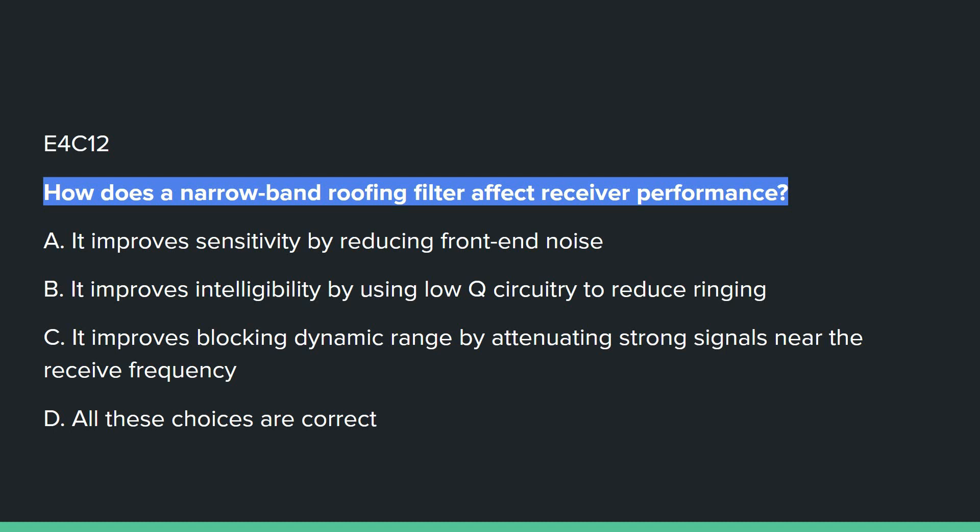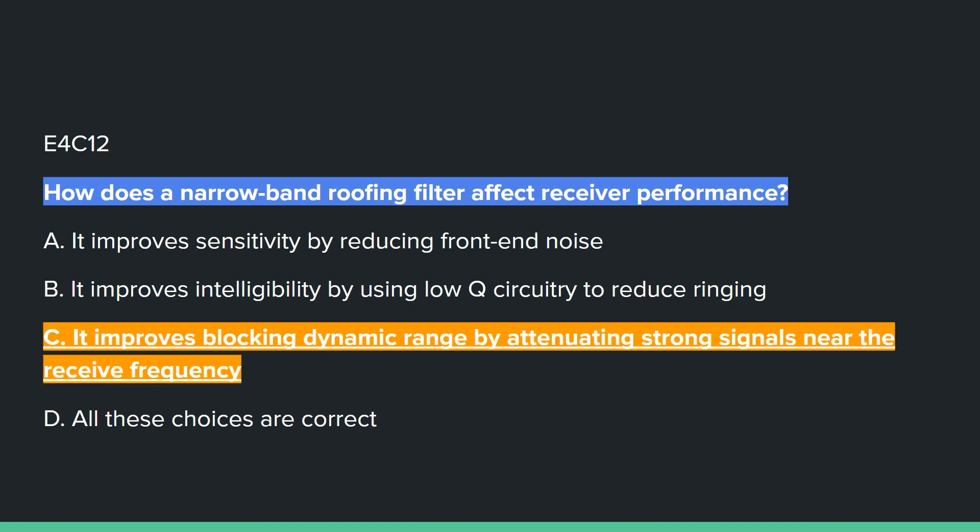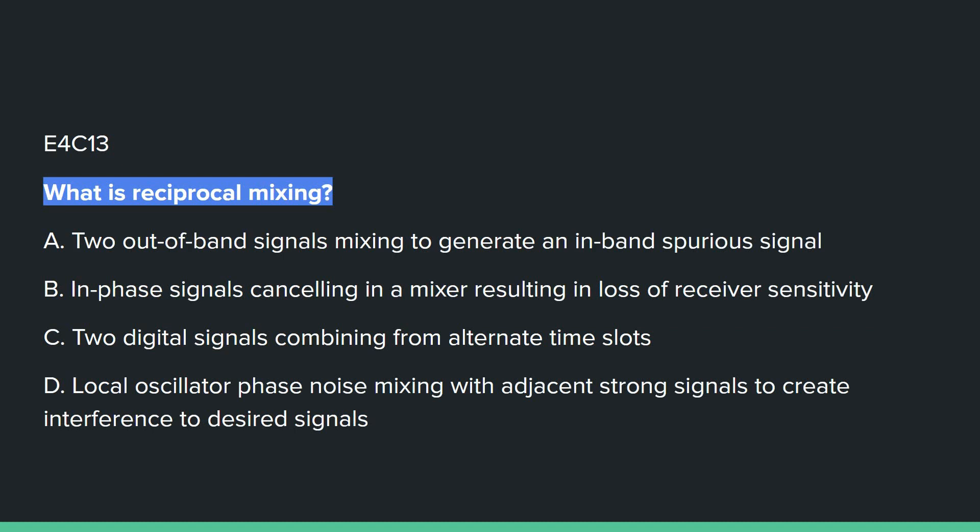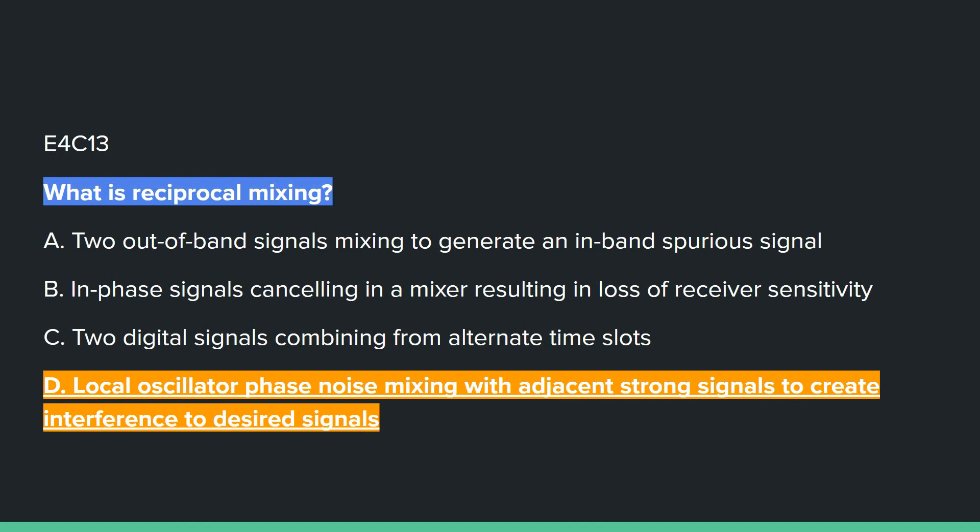E4C12: How does a narrowband roofing filter affect receiver performance? Answer C: it improves blocking dynamic range by attenuating strong signals near the receiver frequency. E4C13: What is reciprocal mixing? Answer D: local oscillator phase noise mixing with an adjacent strong signal to create interference to desired channels.